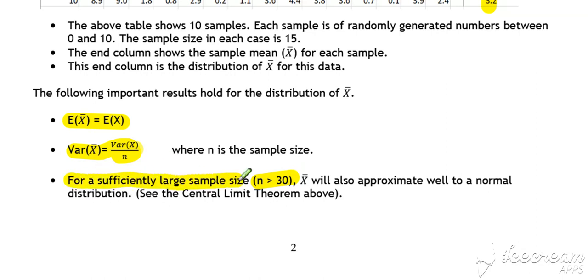So for a sufficiently large sample size, X bar will approximate well to a normal distribution. These results, that's true and that's true whatever the sample size. But this last one, the central limit theorem requires the sample size to be large-ish for X bar to approximate well to a normal distribution.